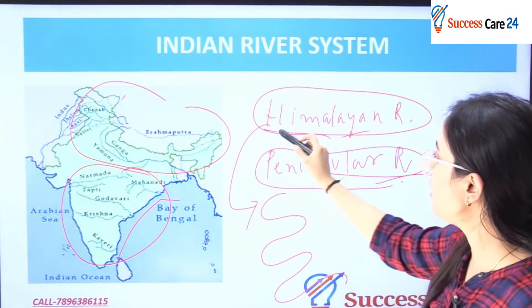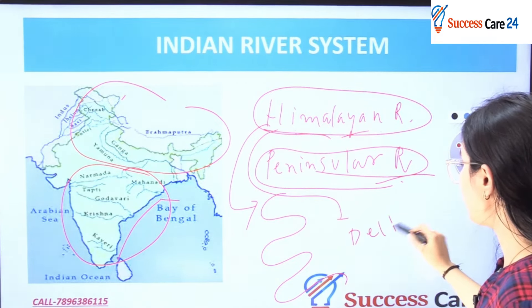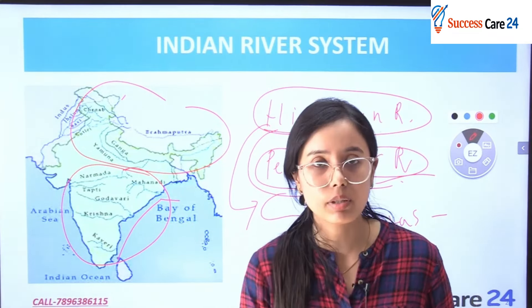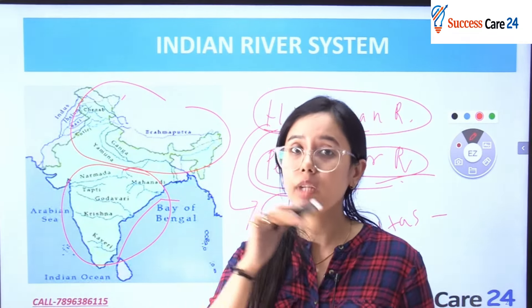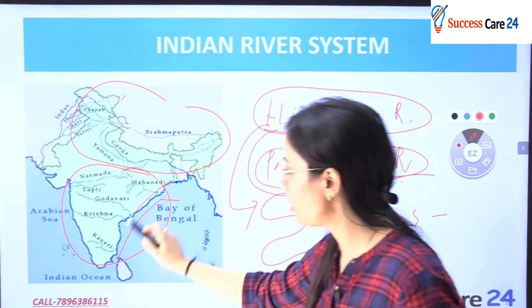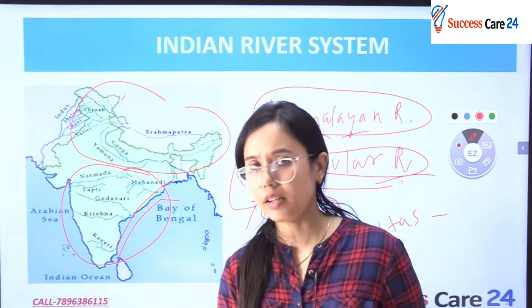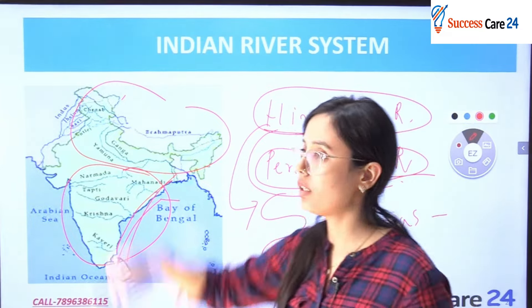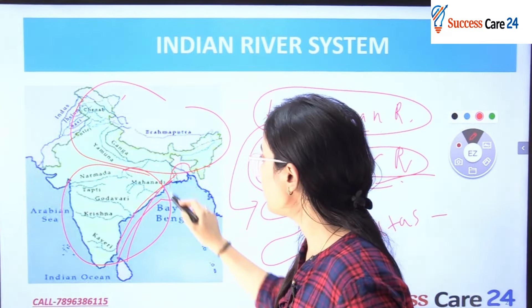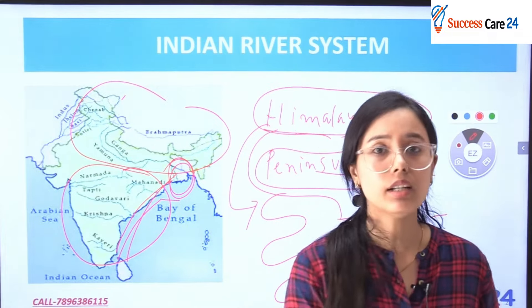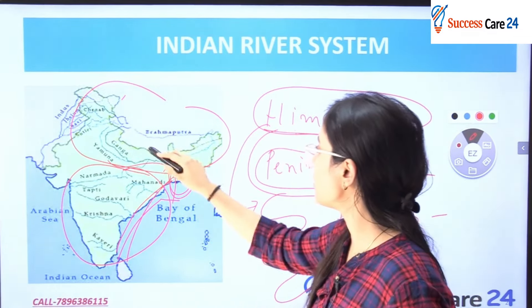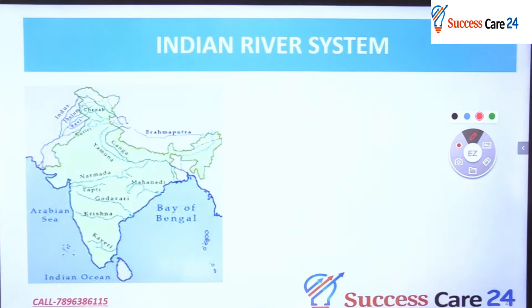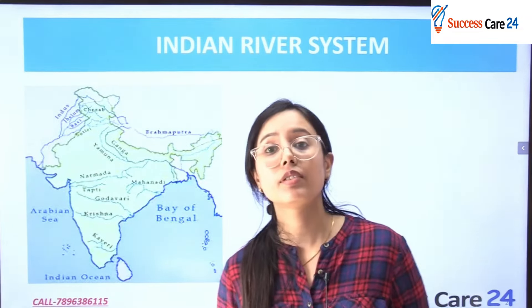The eastern Himalayan and eastern Peninsular rivers also make deltas. Most Himalayan rivers make deltas — for example, the Sundarbans delta, formed by the Ganga and Brahmaputra. This gives you an overall understanding of the two types of river systems: Himalayan and Peninsular.